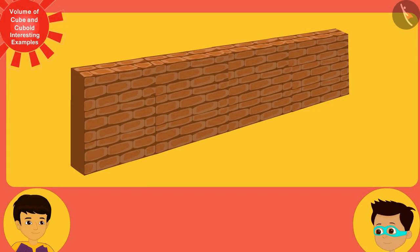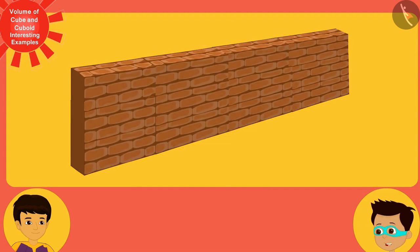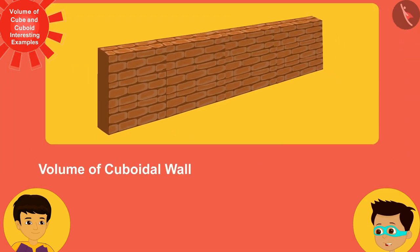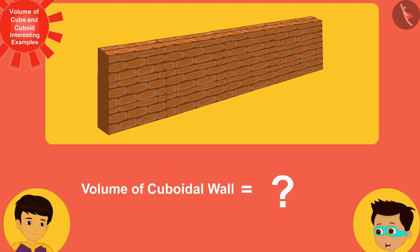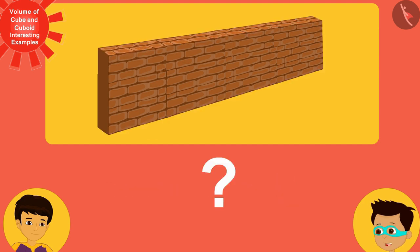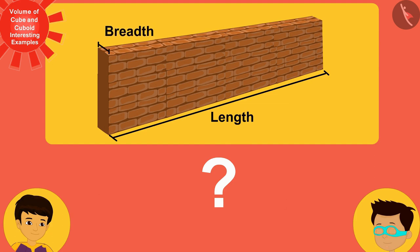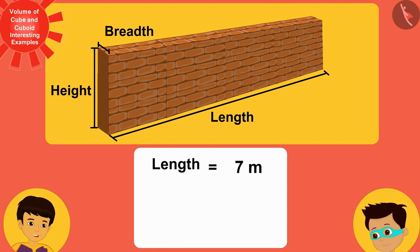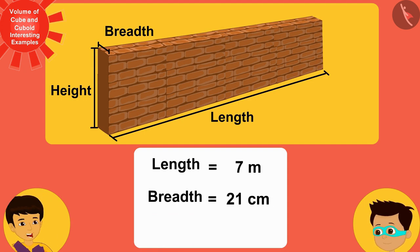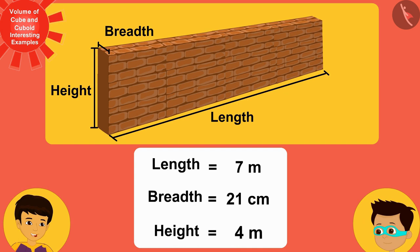The wall is cuboid in shape, and the space occupied by it — that is, the volume of this cuboid — is equal to the space occupied by all the bricks. So let's first find the volume of the wall. The length of the wall is 7 meters, its width is 21 centimeters, and the height of the wall is 4 meters.